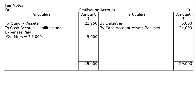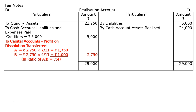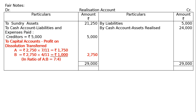Taking the credit side total of rupees 29,000 to the debit side, we find the profit on realization is rupees 2,750. This is transferred to capital accounts as profit on dissolution in the old ratio of A to B which is 7:4. A gets rupees 2,750 multiplied by 7/11, that is rupees 1,750. B gets rupees 2,750 multiplied by 4/11, that is rupees 1,000. Total rupees 2,750.